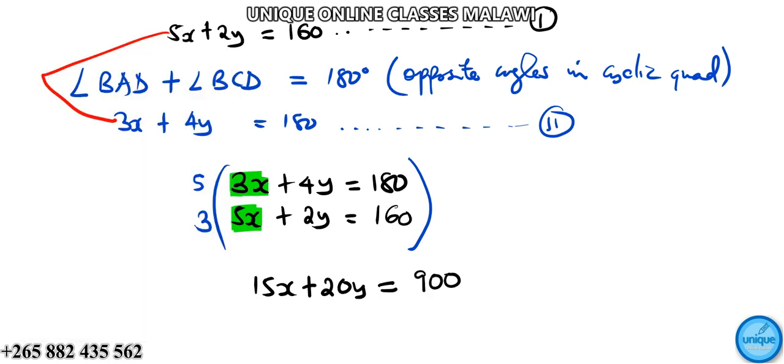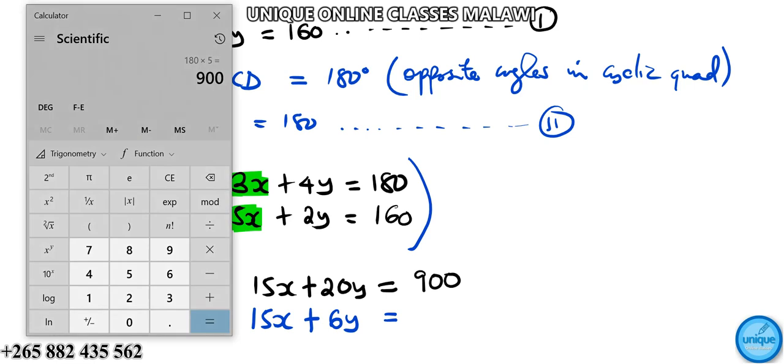Multiplying the second equation by 3 gives 15x plus 6y equals 480.